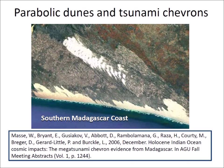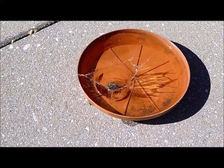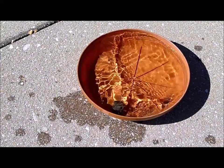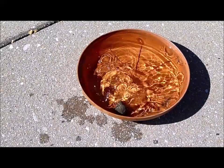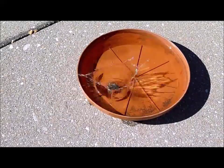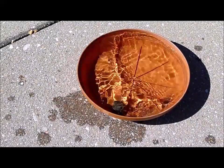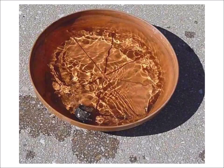Earthquakes, volcanic eruptions, landslides, and cosmic impacts in the sea can create waves large enough to produce chevron dunes. An impact in a small body of water, like a stream or a lake, can also produce splashes that deposit material along the banks.